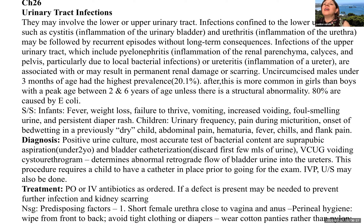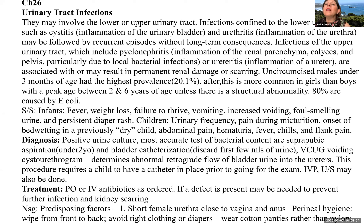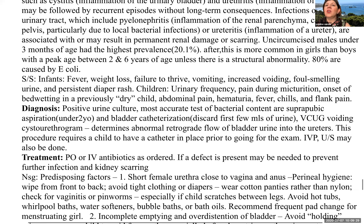The next area is the genitourinary system. The first condition is urinary tract infections. They may involve the lower or upper urinary tract. Lower urinary tract infections such as cystitis or urethritis may be followed by recurrent episodes without long-term problems. Upper urinary tract infections like pyelonephritis can cause permanent renal damage or scarring. Uncircumcised males under three months have the highest prevalence at 20.1%; after this, UTIs are more common in girls, with a peak age between two and six years. 80% are caused by E. coli.